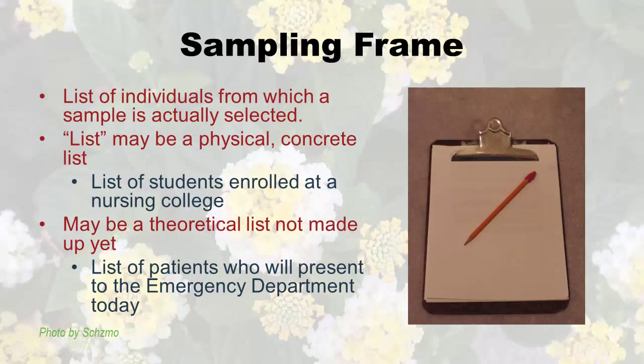That brings us to the concept of sampling frame. The sampling frame is the list of individuals from which a sample is actually selected. The list may be a physical concrete list — like a list of students enrolled at a nursing college, or a list of nurses who work at Massachusetts General Hospital that you'd get from human resources. Or it could be a theoretical list, like the list of patients who present to the emergency department today.